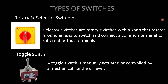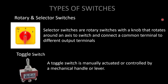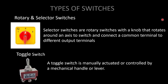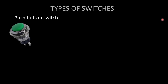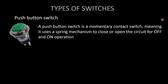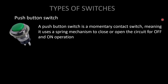A toggle switch is manually actuated by a mechanical handle or lever — we move it up and down to switch on and off. A push button switch is a momentary contact switch that uses a spring mechanism to close or open the circuit for on and off operation. Almost all emergency stop operations use push button type switches.